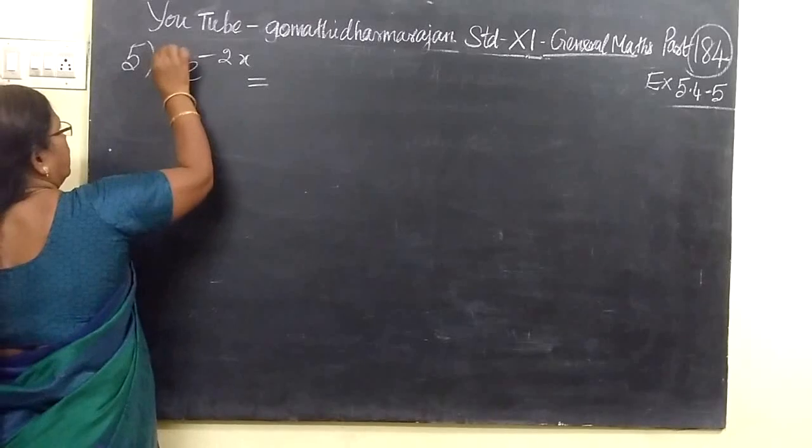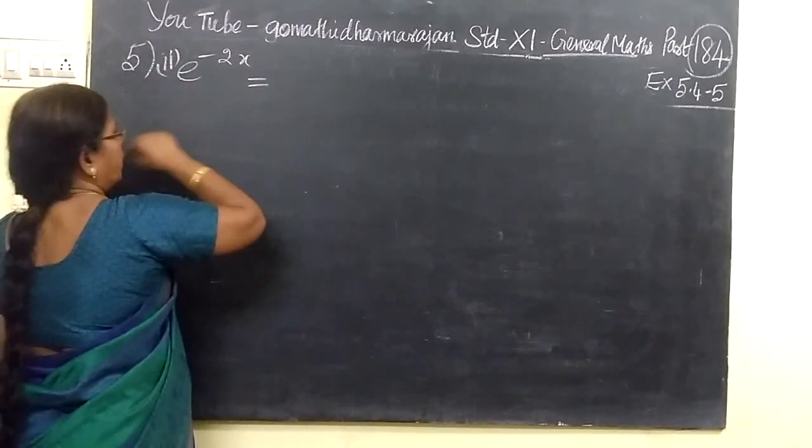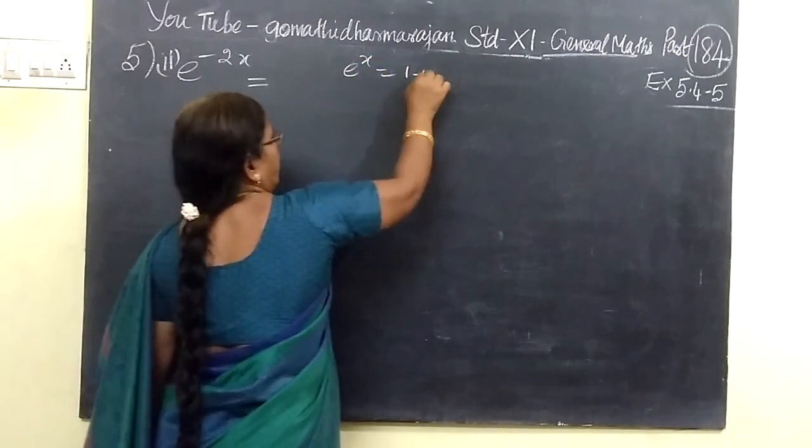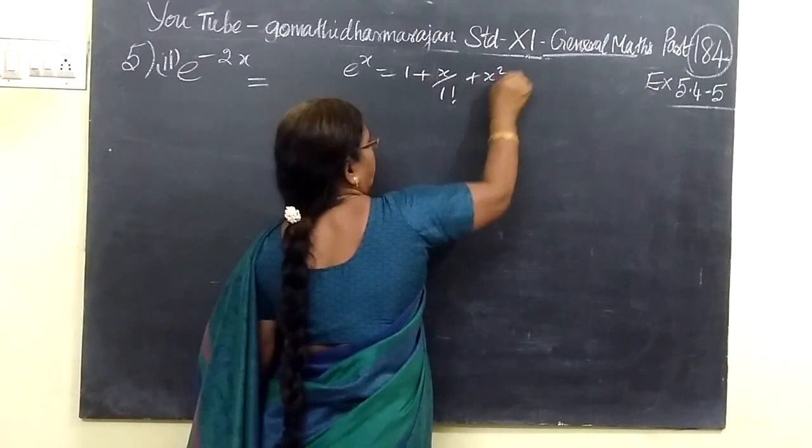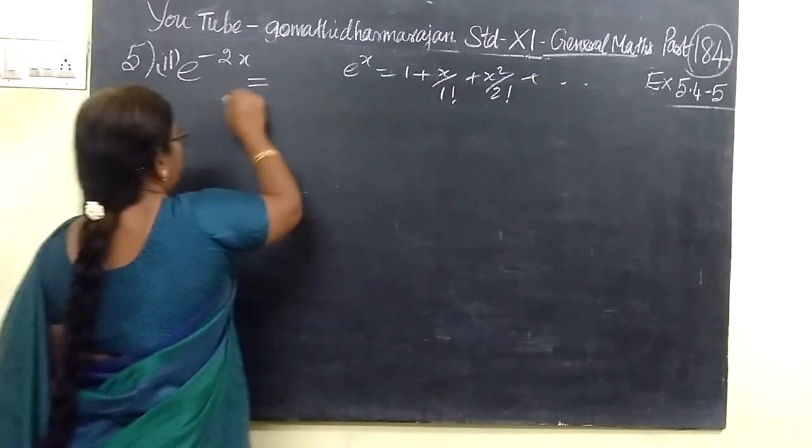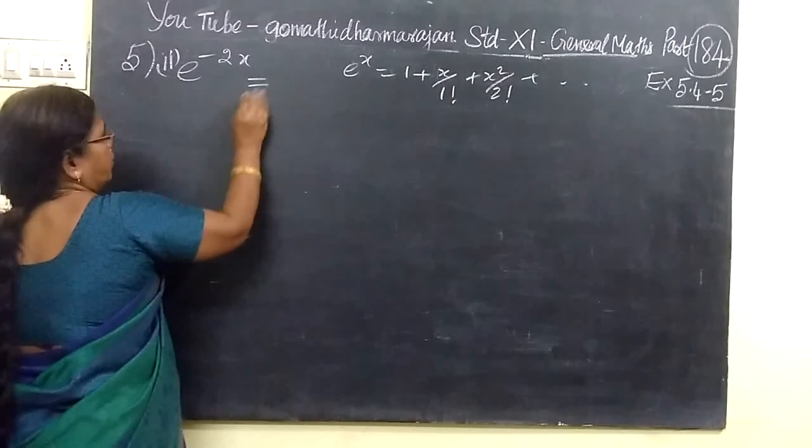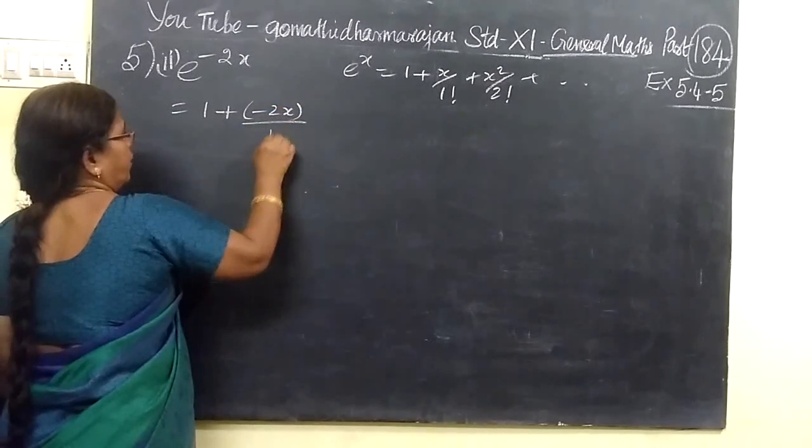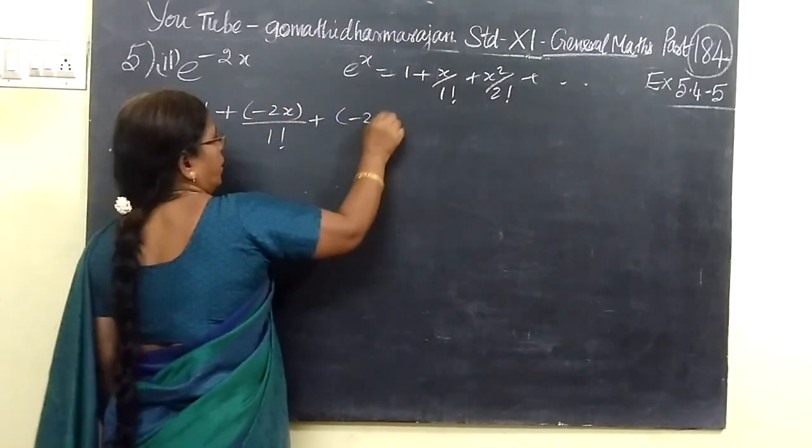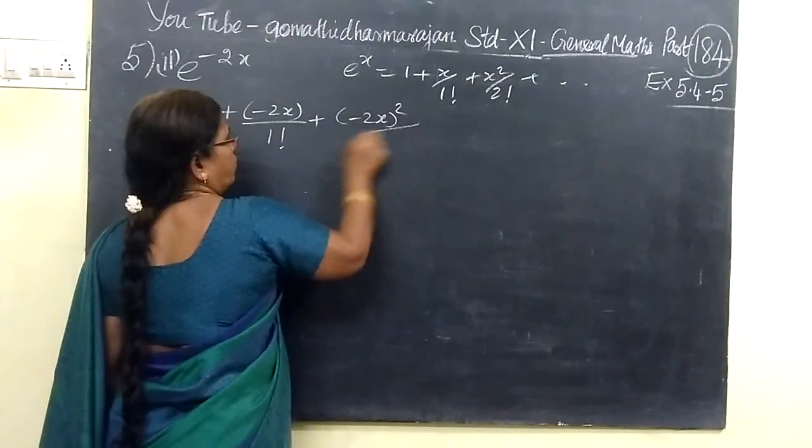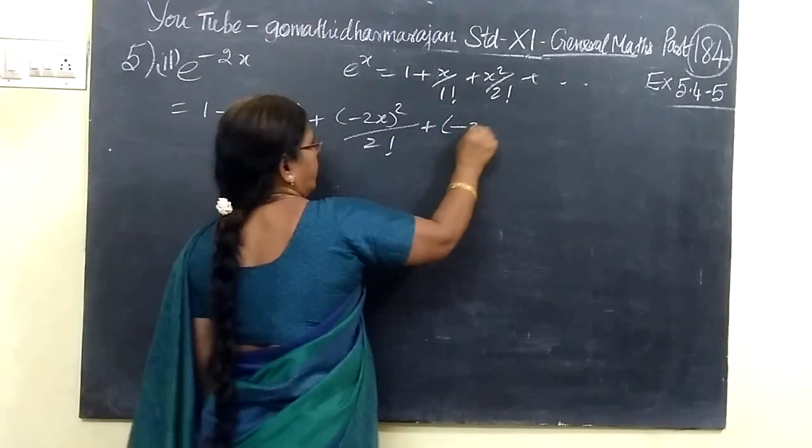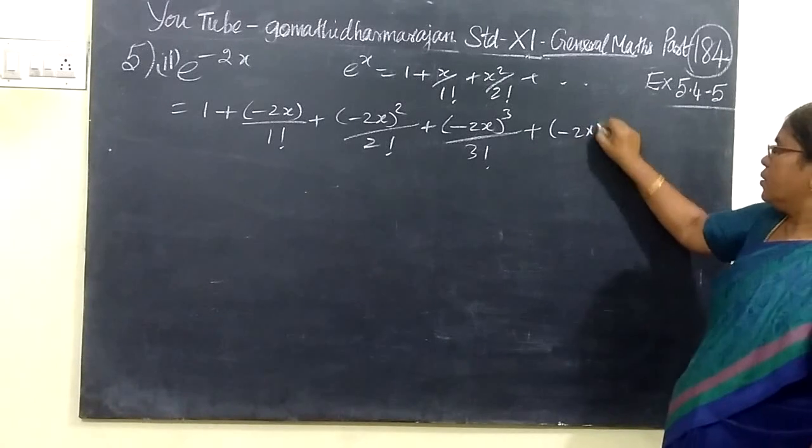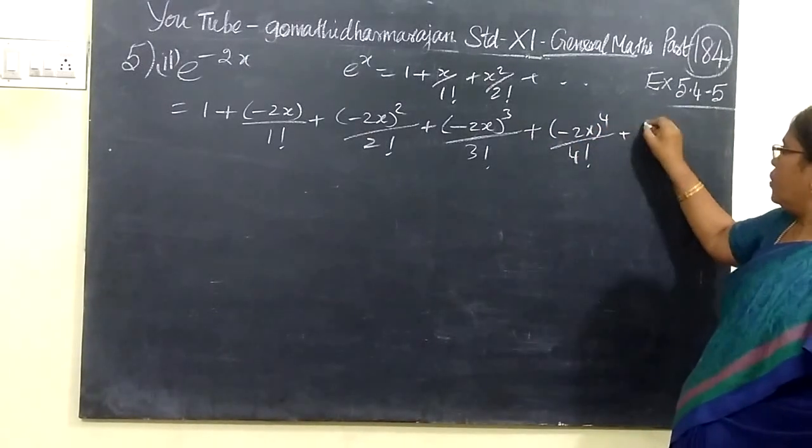So, if you see question 2, one is e to the power minus 2x. We will see: e to the power x equals 1 plus x, when x is equal to x. Then x is equal to x. So, in this way, we are writing, this is e to the power x: 1 plus x by 1, minus 2x by factorial 1, then minus 2x whole squared by factorial 2.